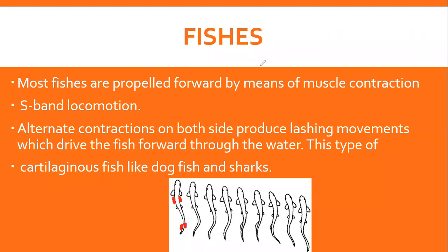یہ type کی locomotion آپ کو specially cartilage fishes میں ملے گی، جیسے dogfish اور shark۔ Fish کے بعد اب amphibians اور reptiles کی locomotion کی بات کرتے ہیں۔